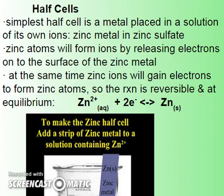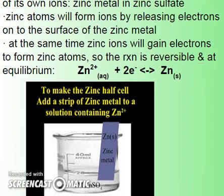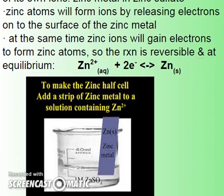A simple half cell is when you place a metal in its own solution, and that solution would be at equilibrium. For example, if you have zinc metal in zinc sulfate, you'll have two reactions going on: zinc atoms will form ions by releasing electrons onto the surface of the zinc metal, and at the same time zinc ions will gain electrons to form zinc atoms. So the reaction is reversible, it's at equilibrium, and you won't see any change in the container at all.